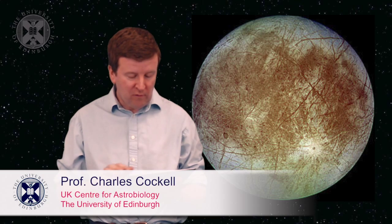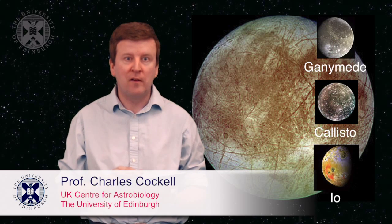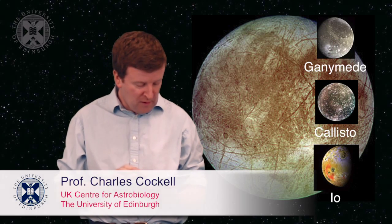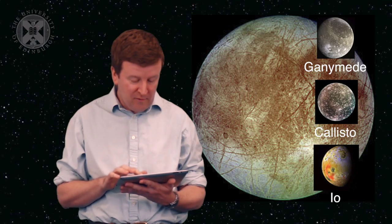Europa is the smallest of Jupiter's Galilean satellites. These are the four moons that were discovered by Galileo Galilei in 1610.